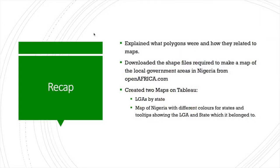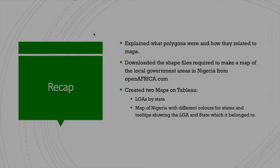Just to recap on what we've just done: we explained what polygons were and how they're related to maps. We downloaded the shape files required to make the map of the local government areas in Nigeria from openafrica.com. And we created two maps in Tableau, which can then subsequently be used for data visualizations — maybe if you want to append population data or healthcare data, as I said at the beginning, whatever you want to do.